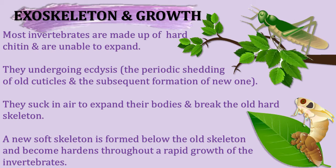Exoskeleton and growth: most invertebrate exoskeletons are made of hard chitin and are unable to expand. The non-living skeleton does not grow with the invertebrate, so ecdysis is required to accommodate increases in the animal's size. Ecdysis is the periodic shedding of the cuticle and the subsequent formation of a new one. The animal sucks in air to expand its body and break the old exoskeleton. A new soft skeleton forms below the old one. The animal is vulnerable during this process because the new skeleton is very soft until it dries and hardens.